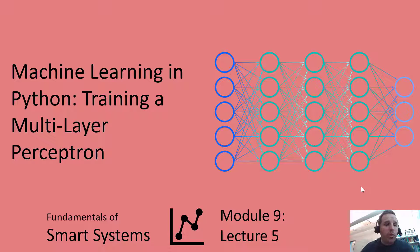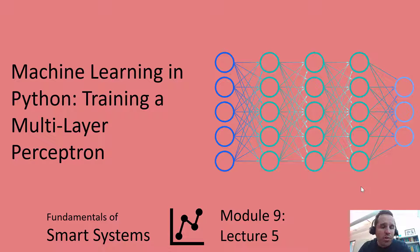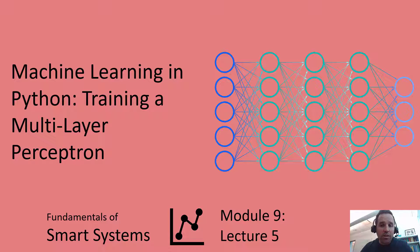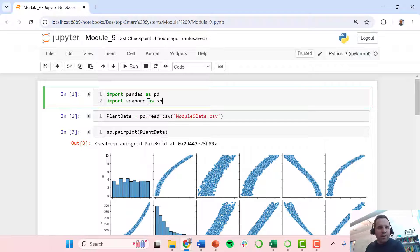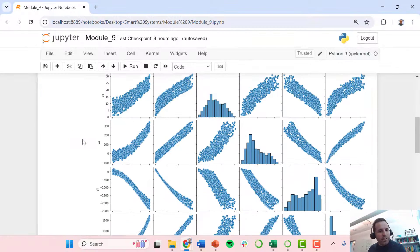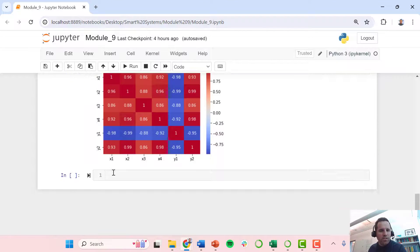In this video lecture we're going to be talking about training a multi-layer perceptron. We've spent a few lectures talking about what is an artificial neural network and how it's trained, but now I'm going to show you how to do this in Python, specifically using the Keras toolbox. We have a dataset we're going to continue using — it's available as a download in the video description. We'll pick up where we left off: we loaded our tools using Pandas and Seaborn, read in the data, looked at pair plots and correlation coefficients. Now we're going to dig into the actual machine learning.